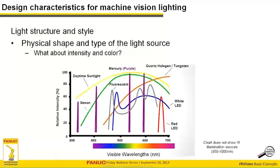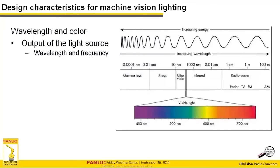Visible light runs between approximately 400 and 700 nanometers in wavelength, with frequency decreasing as wavelength increases. There are other electromagnetic spectrum ranges useful for machine vision — ultraviolet and infrared, for example. A lot of people got used to using just red LEDs in the late 90s and early 2000s because that was the first LED invented and cheapest to obtain, but nowadays most colors are available effectively and inexpensively.